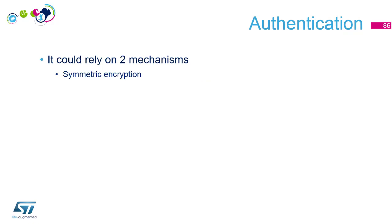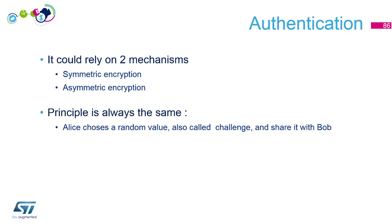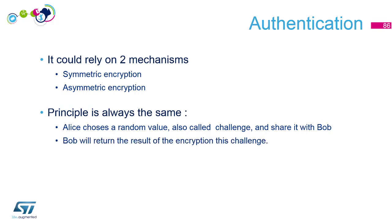Authentication can rely on two mechanisms: symmetric encryption and asymmetric encryption. The principle will always be the same — Alice will choose a random value, called the challenge, and share it with Bob. Bob will return the encryption of this challenge, and then Alice can check the result to verify Bob's identity.